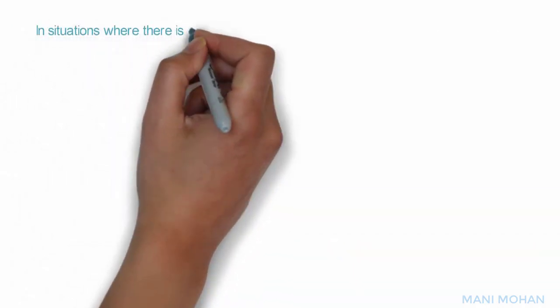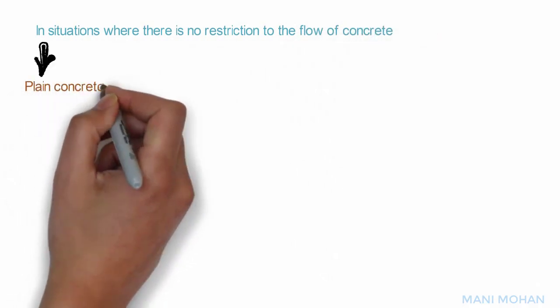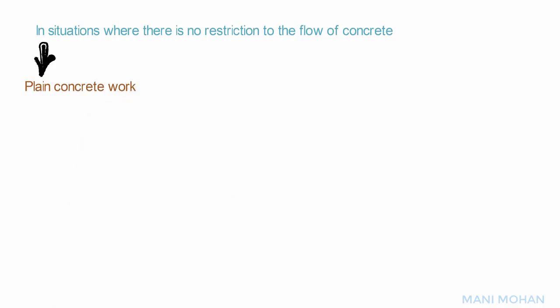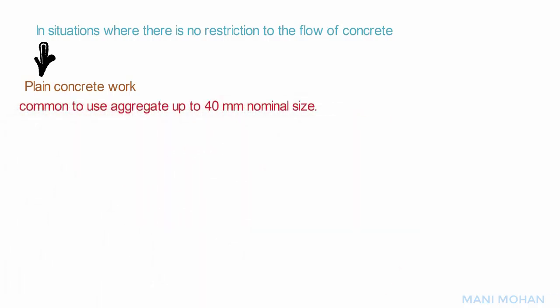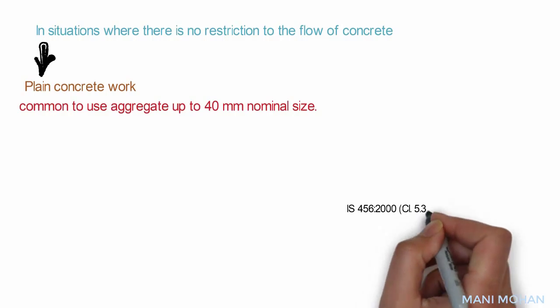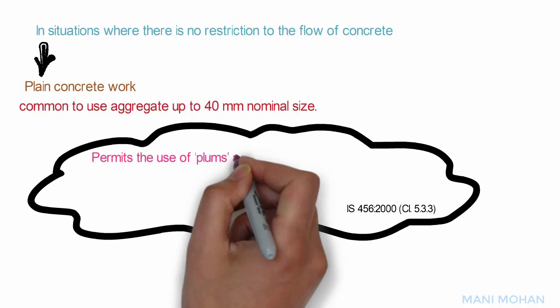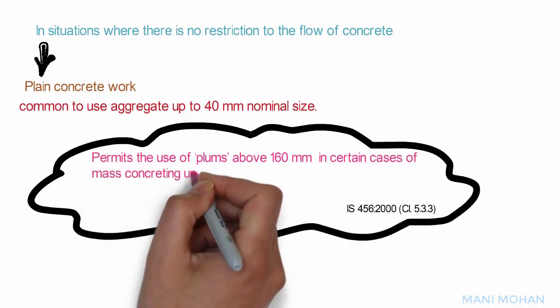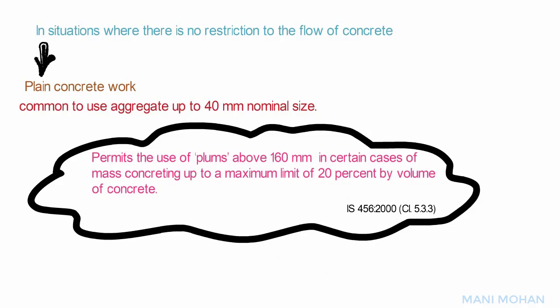In situations where there is no restriction to the flow of concrete, as in most plain concrete work, there is no restriction on the maximum aggregate size. It is common to use aggregate up to 40 mm nominal size in base concrete underneath foundations. IS 456-2000 clause 5.3.3 even permits the use of plums — aggregate of size above 160 mm — in certain cases of mass concreting, up to a maximum limit of 20% by volume of concrete.